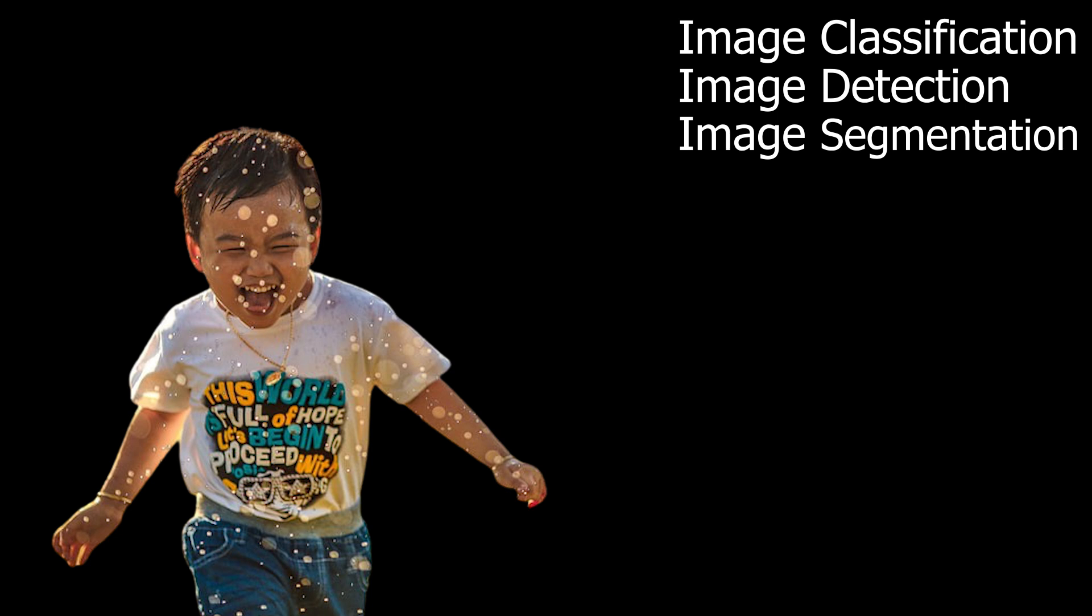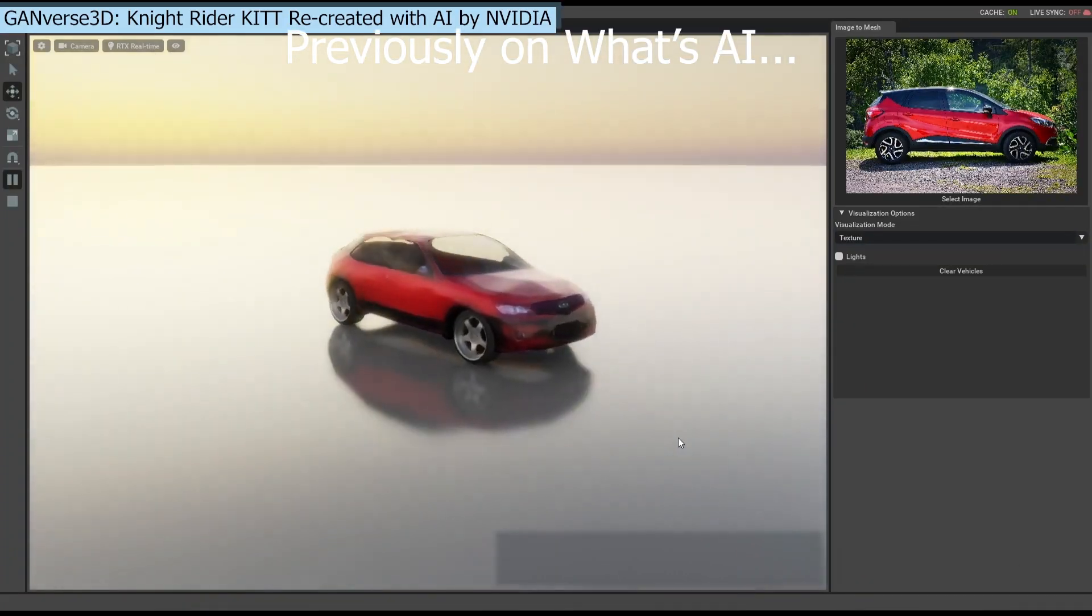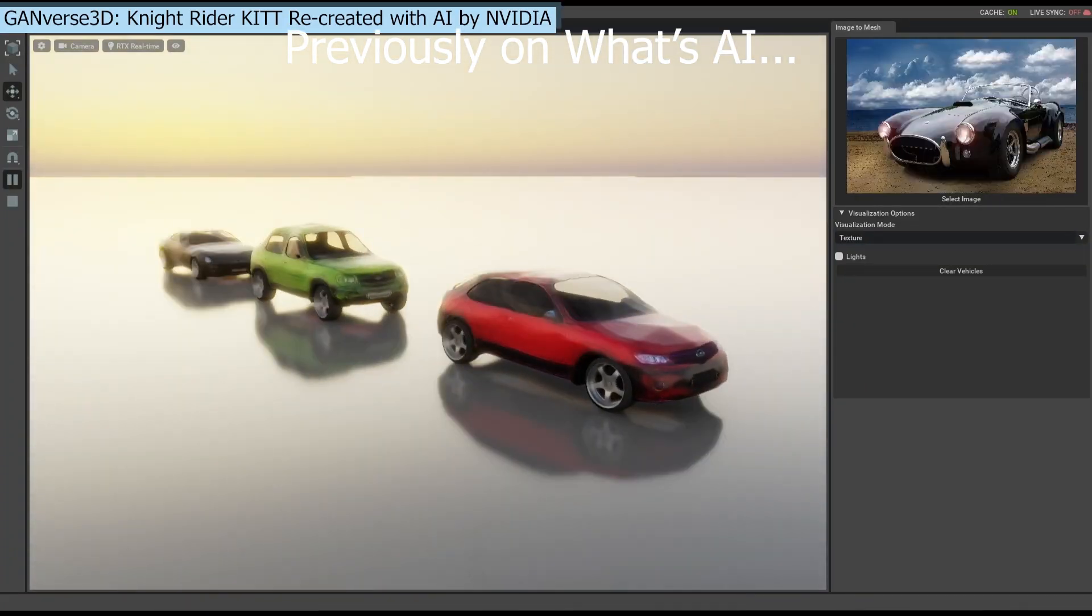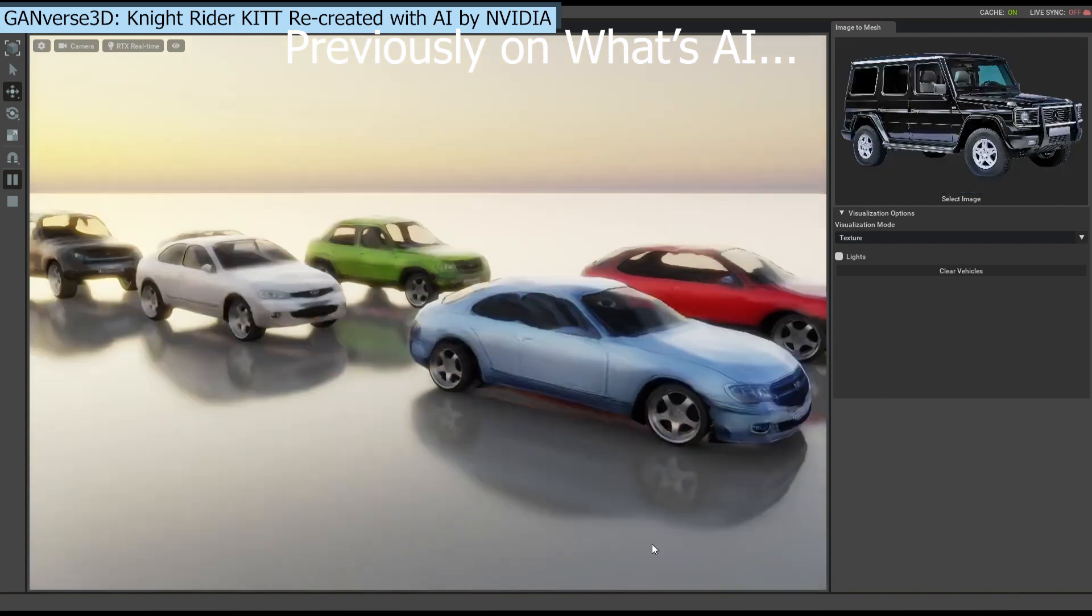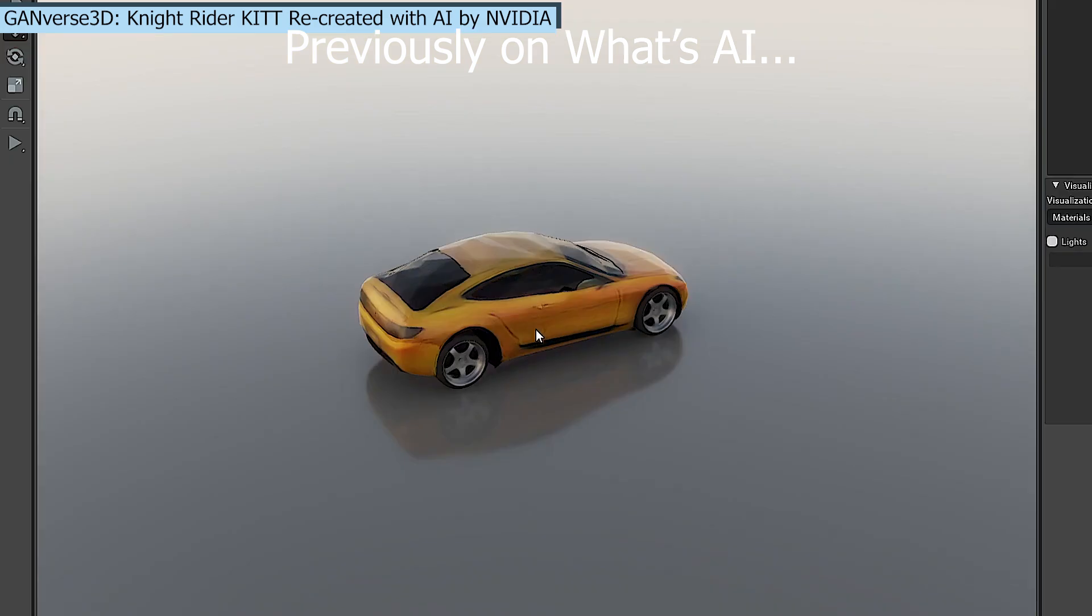Now, an even more complex step will be to represent this image in the real world. In other words, it will be to represent an object taken from an image or a video into a 3D surface, just like Ganverse 3D can do for inanimate objects as I showed in a recent video.